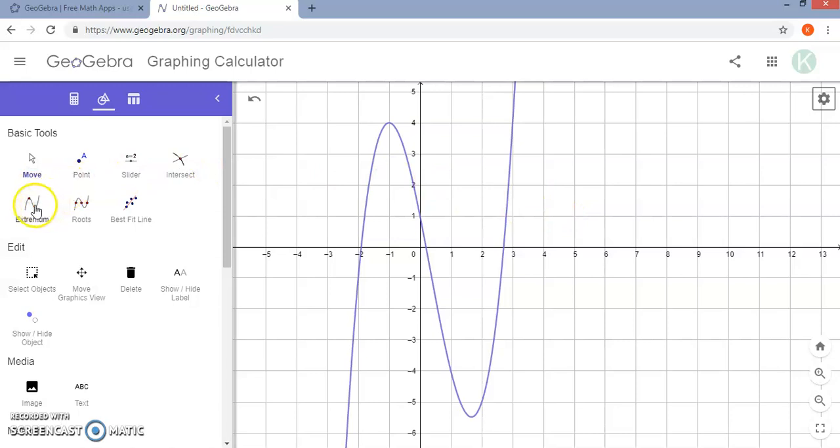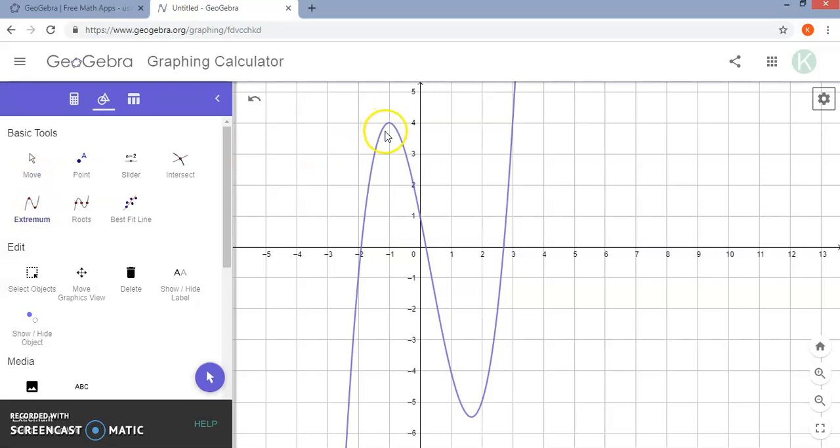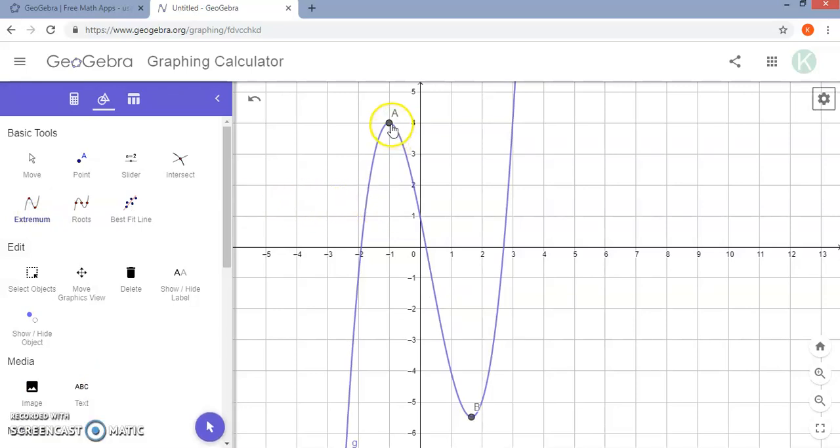Then you'll notice we also have features of extremum. So all you need to do is select the function—you don't even need to select where you think those extreme values will be. Once I select my function... that of course is not cooperating with me. So I'm going to select extremum and then I'm going to select my function. Notice it puts a point for each of the two extrema and labels them. If I go over here to the algebra tab, it will give me the ordered pair for those two extrema.